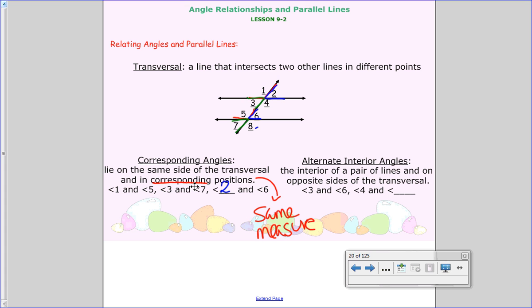Then we have alternate interior angles. Now when we talk about those, you can really look at the word itself to help you solve that one. Alternate means opposite. Interior means the inside. So we're going to look on the inside with these numbers. That's what it means when alternate interior angles. The interior of a pair of lines on opposite sides of the transversal. So here, angle 3 corresponds with angle 6, and then angle 4 would correspond opposite side, angle 5.